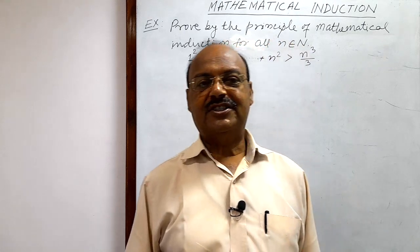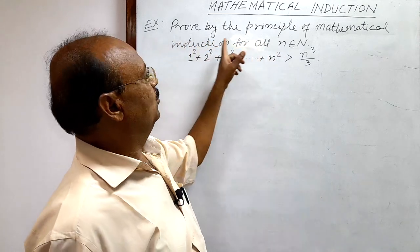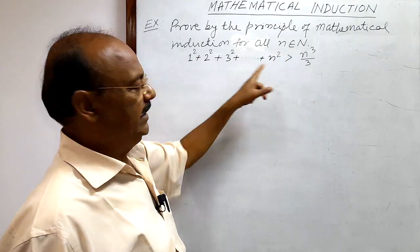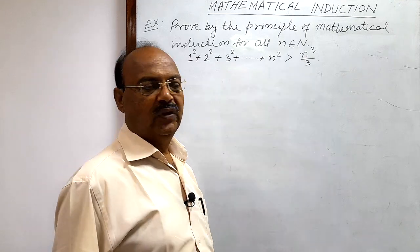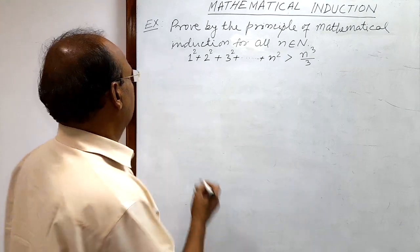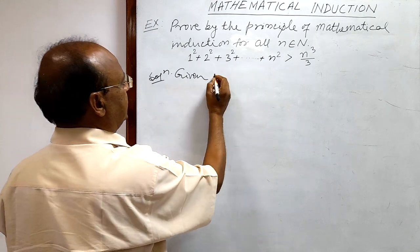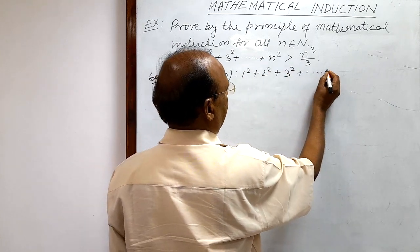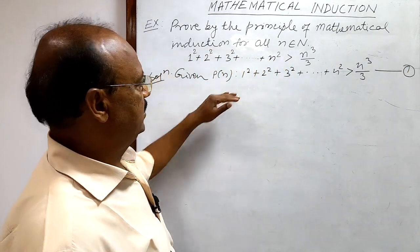Welcome students. Let us see a very interesting question from the NCERT book of class 11, from the chapter Mathematical Induction. The question is: prove by the principle of mathematical induction for all n belonging to the set of natural numbers N. The given mathematical statement is 1² + 2² + 3² + ... + n² > n³/3. The mathematical statement is denoted by P(n), so P(n): 1² + 2² + 3² + ... + n² > n³/3. Let us call it relation number 1.